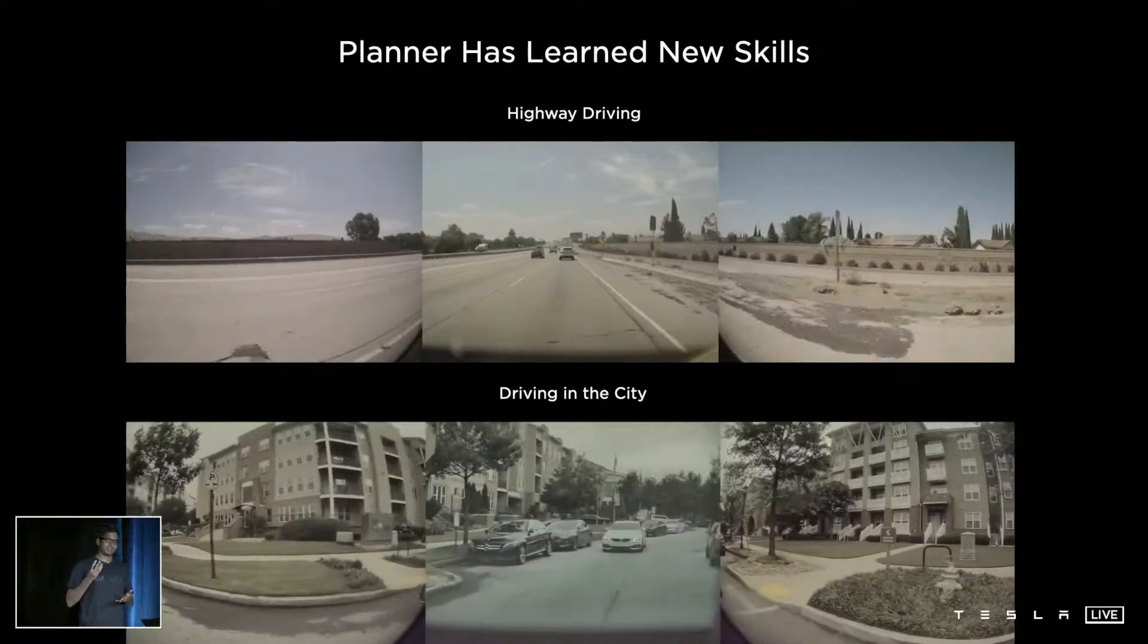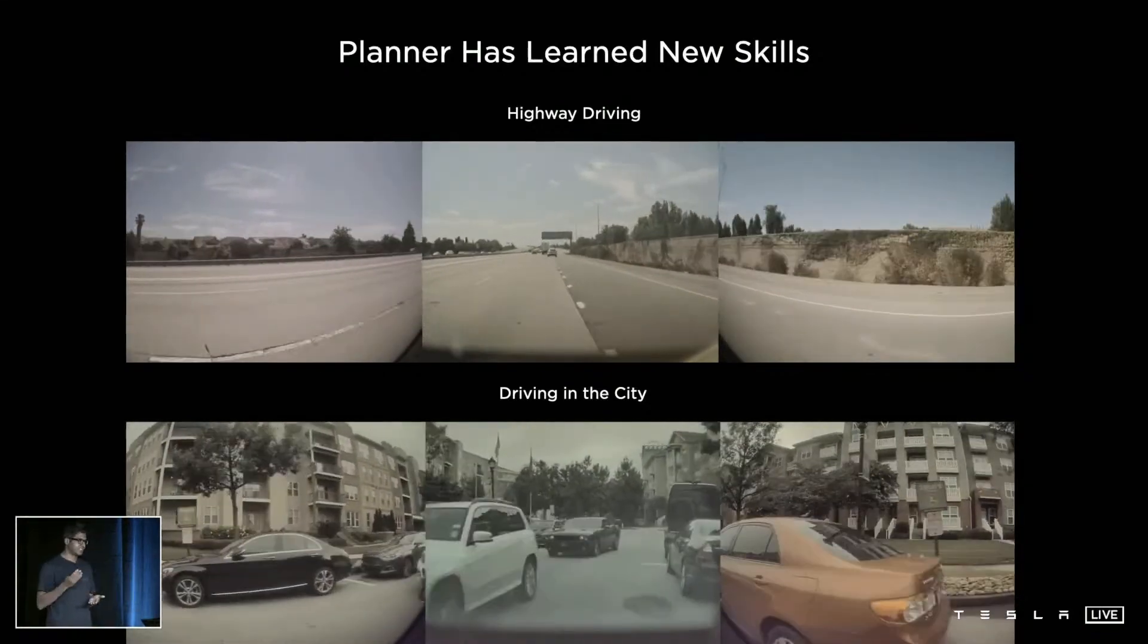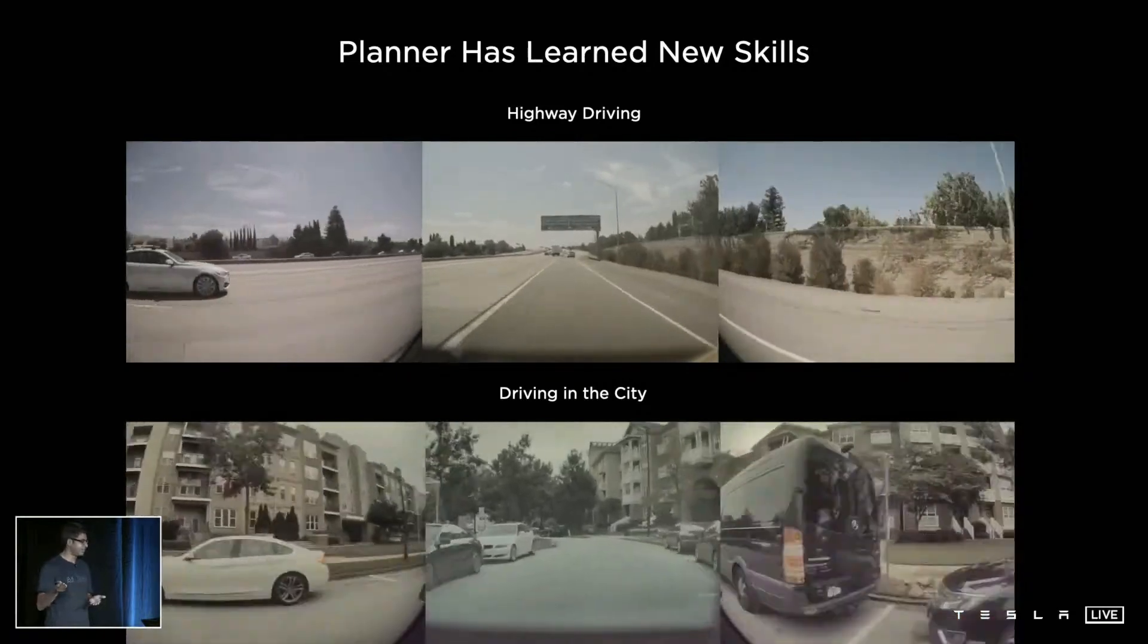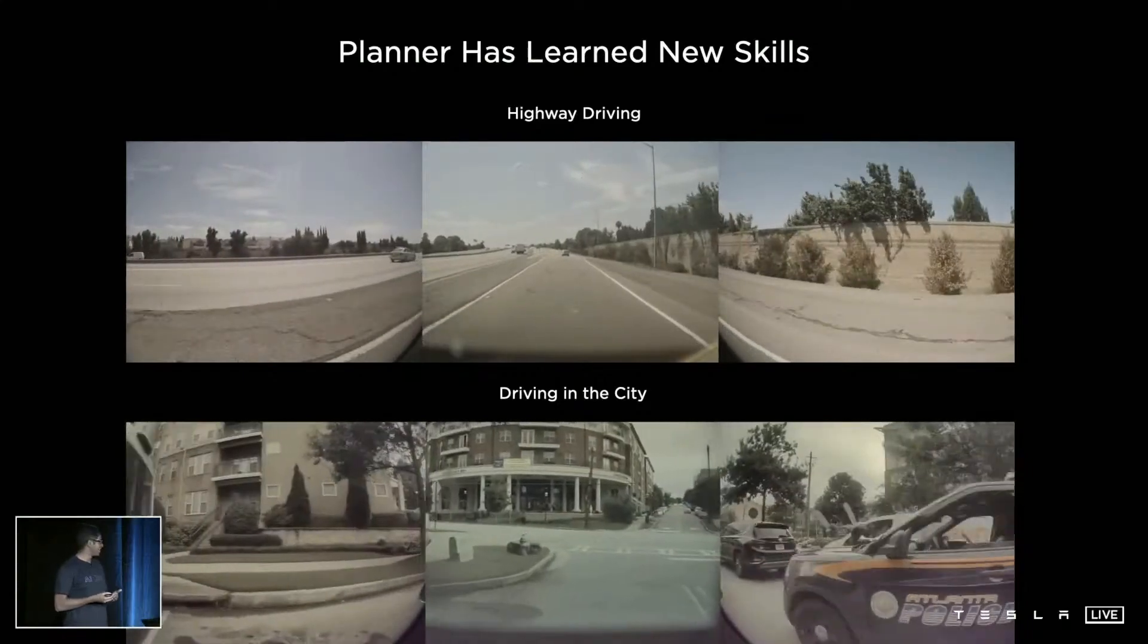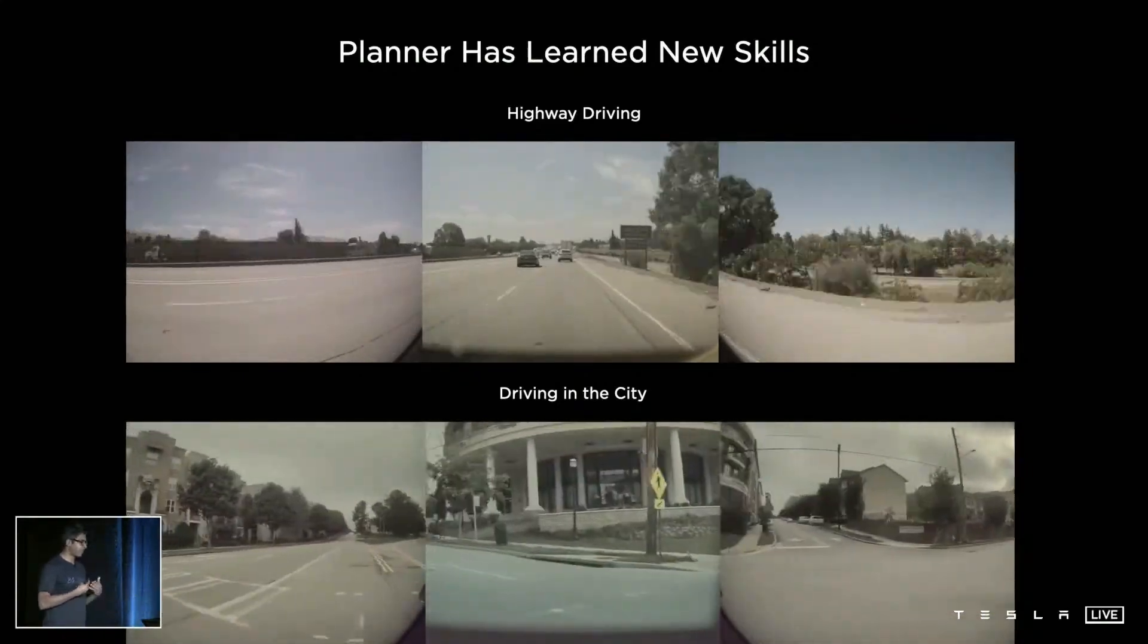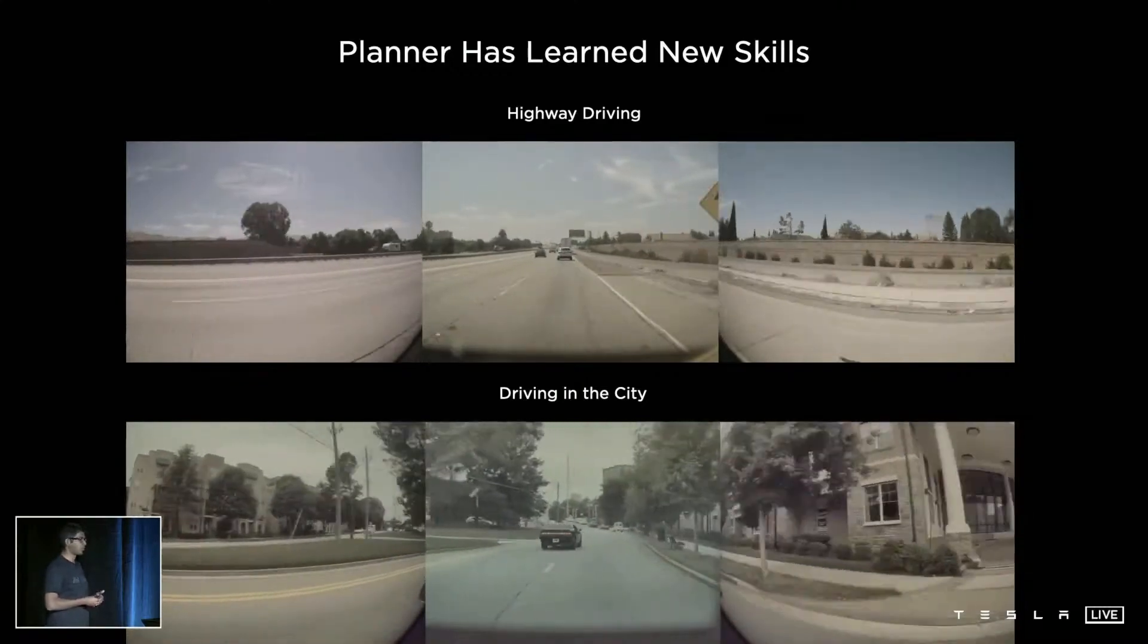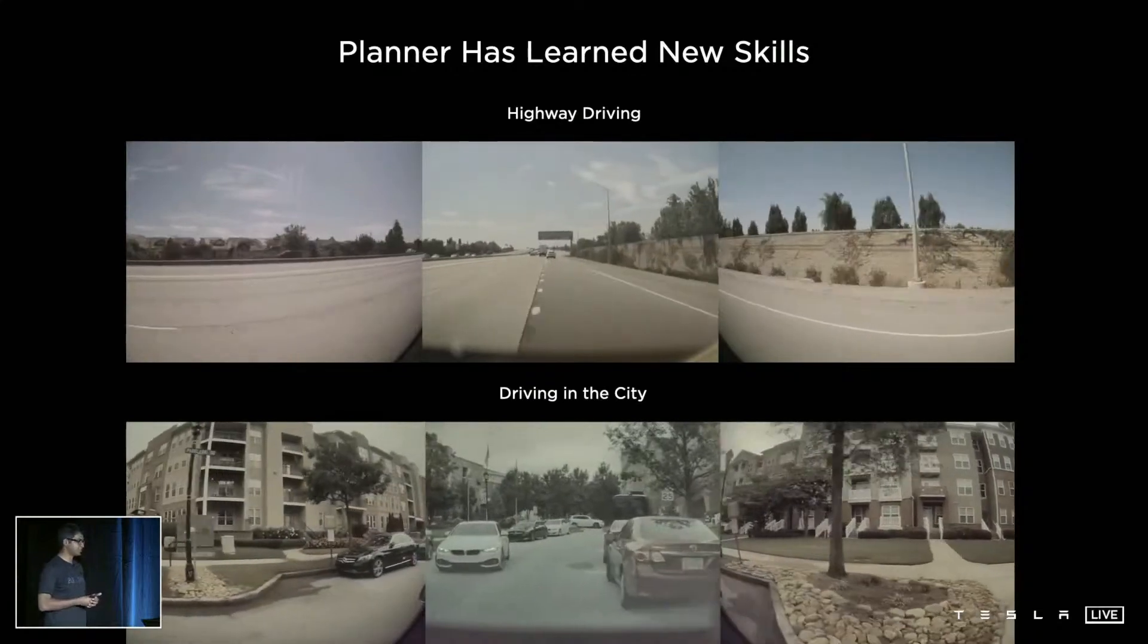Even back in 2019, our planner was a pretty capable driver. It was able to stay in the lanes, make lane changes as necessary, and take exits off the highway. But city driving is much more complicated. Rarely are there structured lanes. Vehicles do much more free-form driving and the car has to respond to all sorts of turning and crossing vehicles and pedestrians doing funny things.